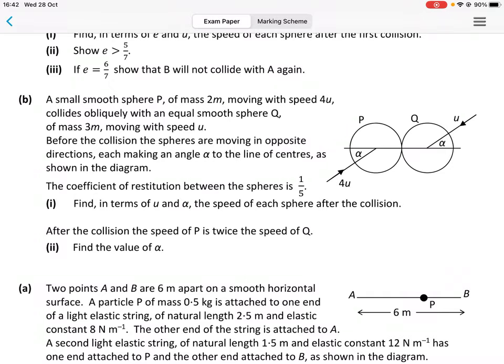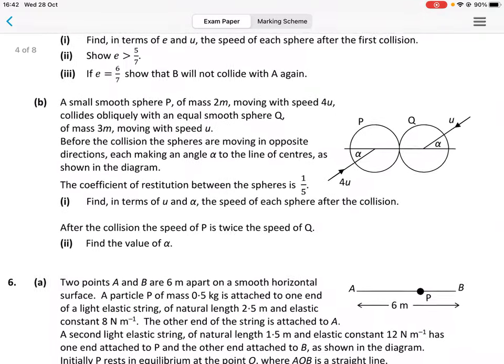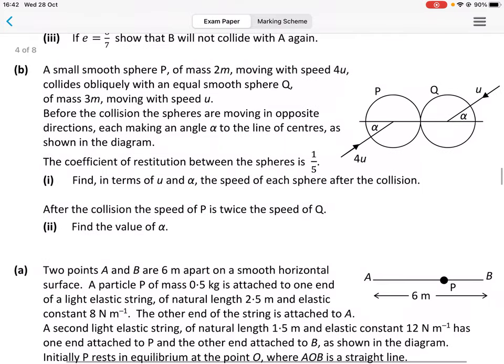Okay, so we're taking a look at 2018 question 5b part 2. And it says, after the collision, the speed of P is twice the speed of Q, find the value of alpha.